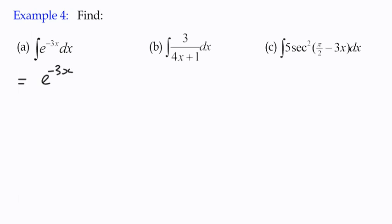In other words, the first thing we do is we write down the function unchanged, because that's what integrating an exponential function does - it doesn't change. However, that's not the final answer, because it's a composite function. We then have to divide by the derivative of this inside function here. Negative 3x differentiates to negative 3.